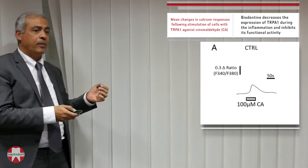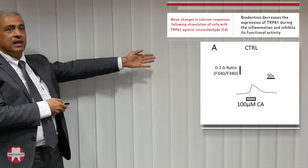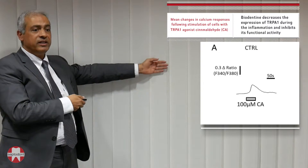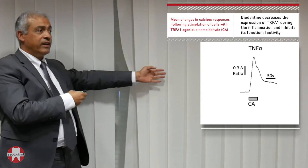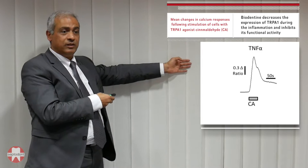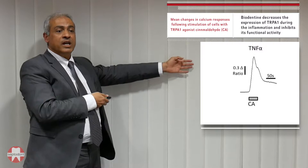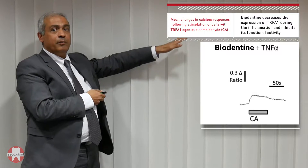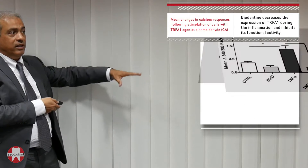We then investigated functional activity using a protocol where cells are stimulated with cinnamaldehyde — a chemical that activates this TRP receptor. The baseline calcium ion entry is very low, but when the pro-inflammatory factor TNF-alpha is added, calcium ion entry increases significantly. When Biodentine and TNF-alpha are applied together, this response is suppressed.